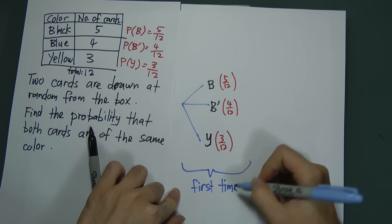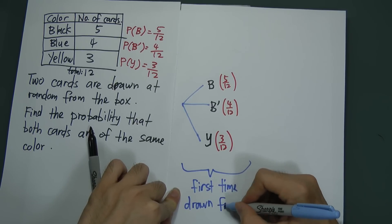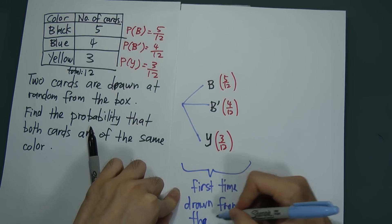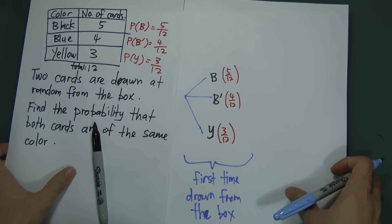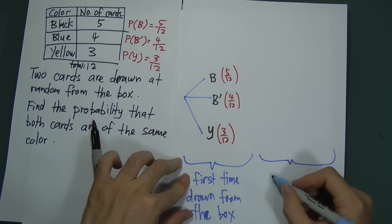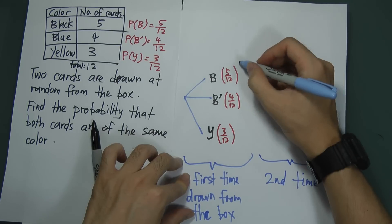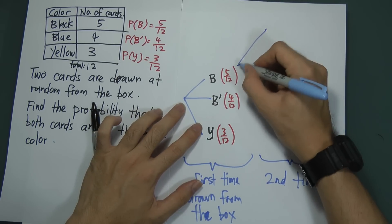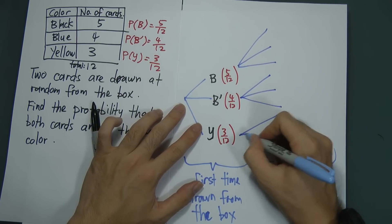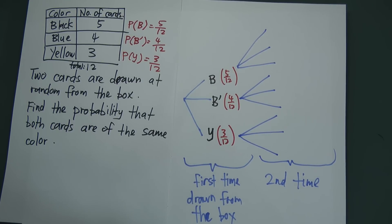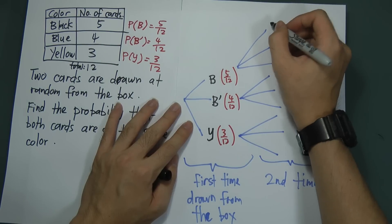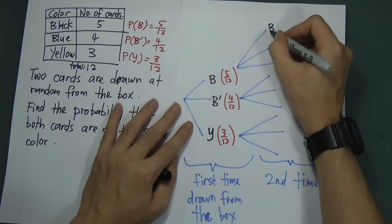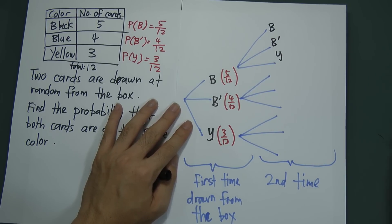I label this as the first draw from the box. Because the question asks for two cards, I need to draw two times. So now I add a second level to the tree. The second draw also has three branches — black, blue, and yellow — for each branch of the first draw. This means if I got black the first time, the second time I can still get black, blue, or yellow.